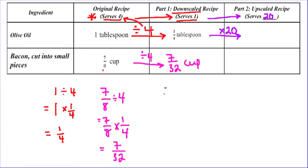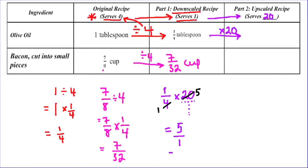One quarter is for one person, and I'm going to multiply that by 20. Remember this is like saying 20 over 1, and we can look for opportunities to cross-cancel. I'm going to simplify the 4 to a 1 and the 20 to a 5, because 20 and 4 have a common factor of 4. Using the same multiplication technique, 1 times 5 is 5, and 1 times 1 is 1. So this is 5 — I would need 5 tablespoons (TBSP) for 20 people.